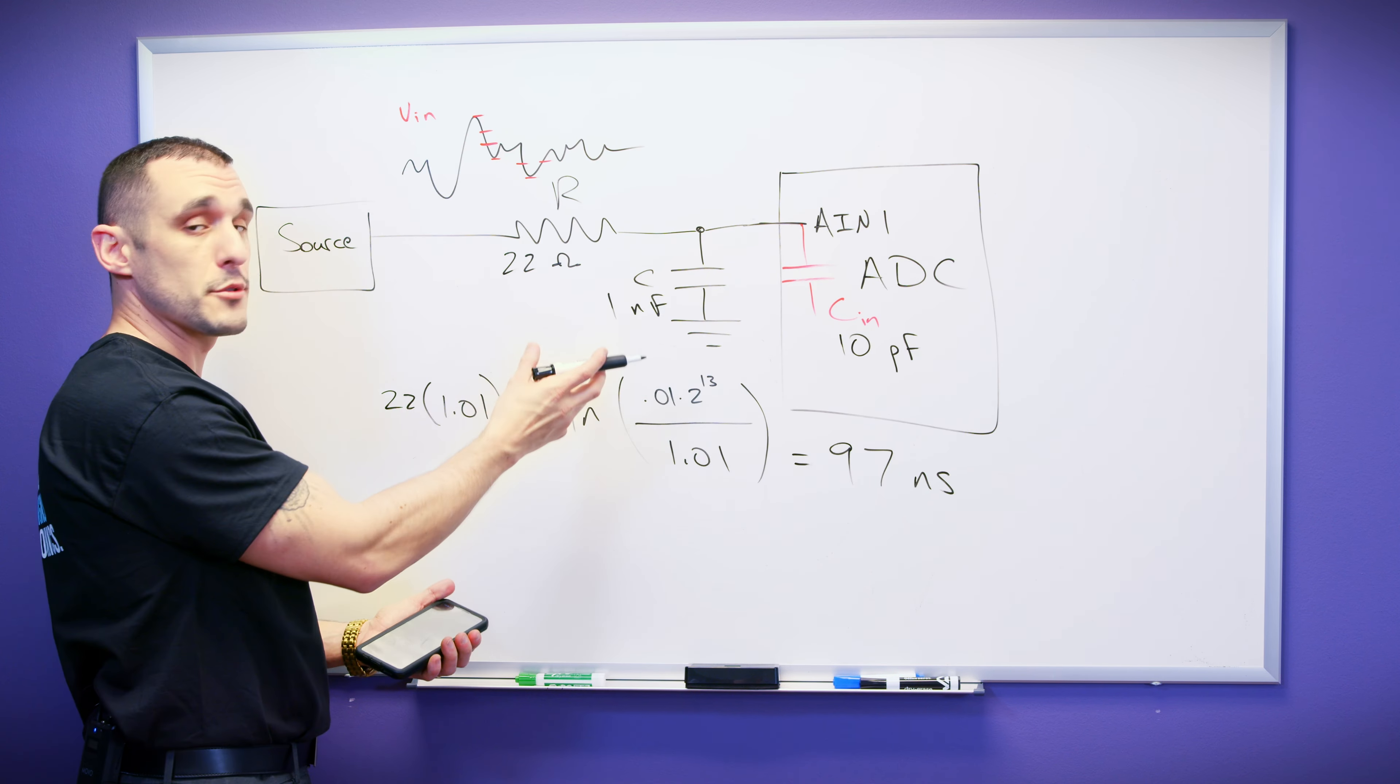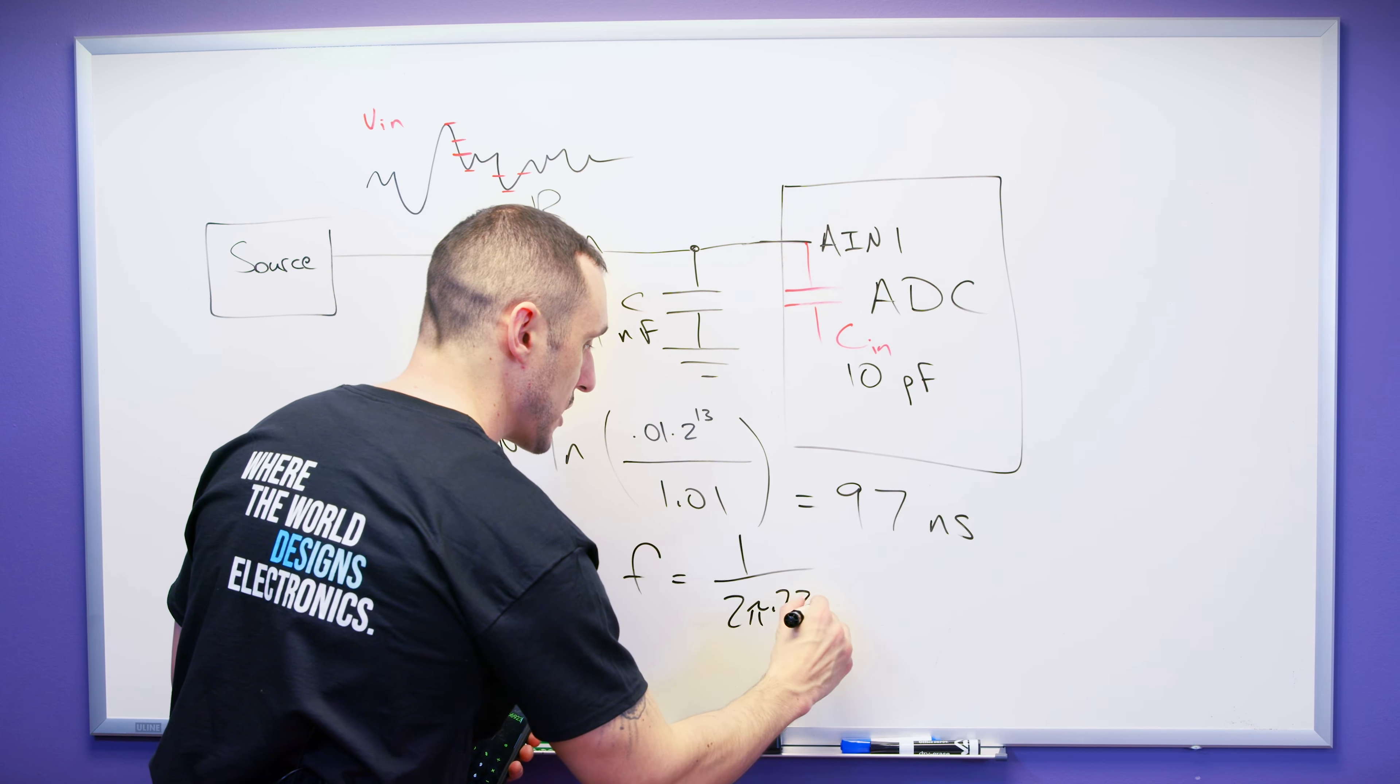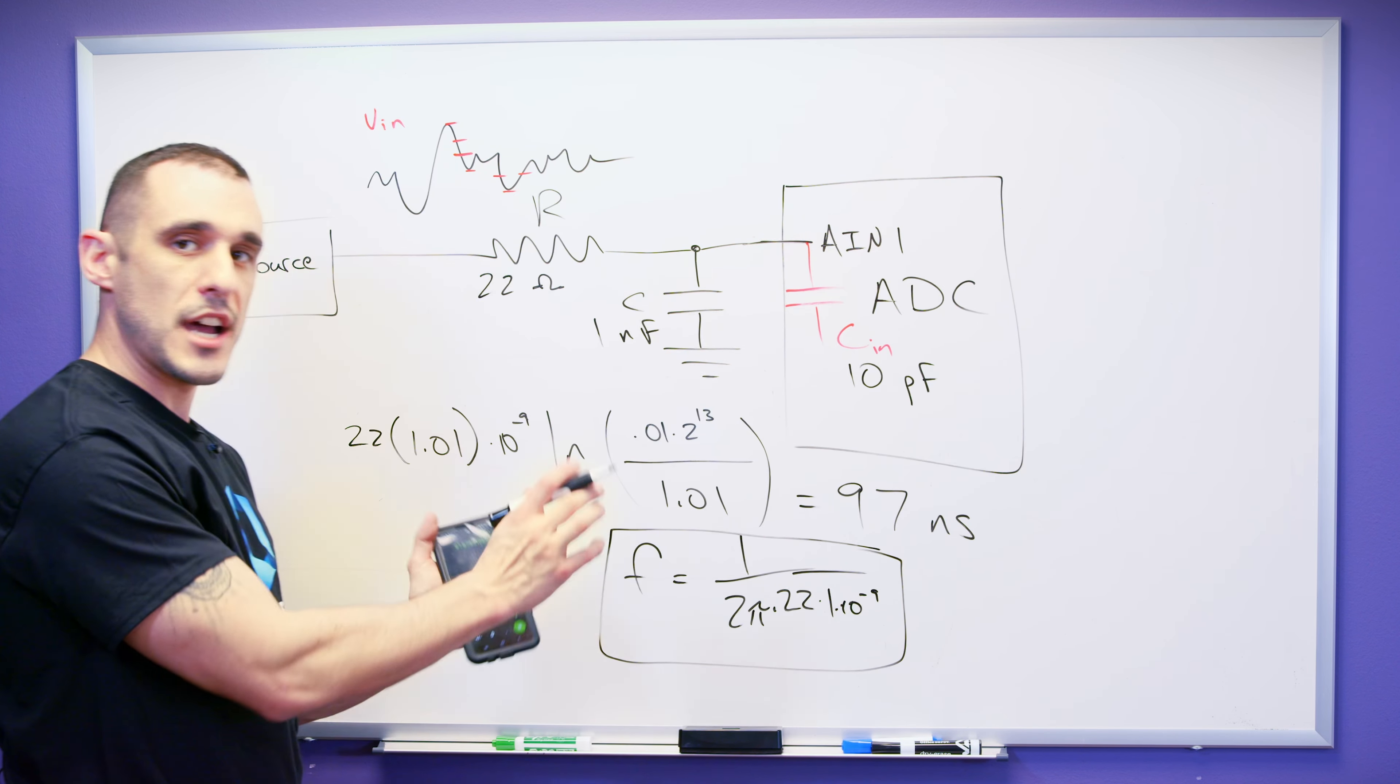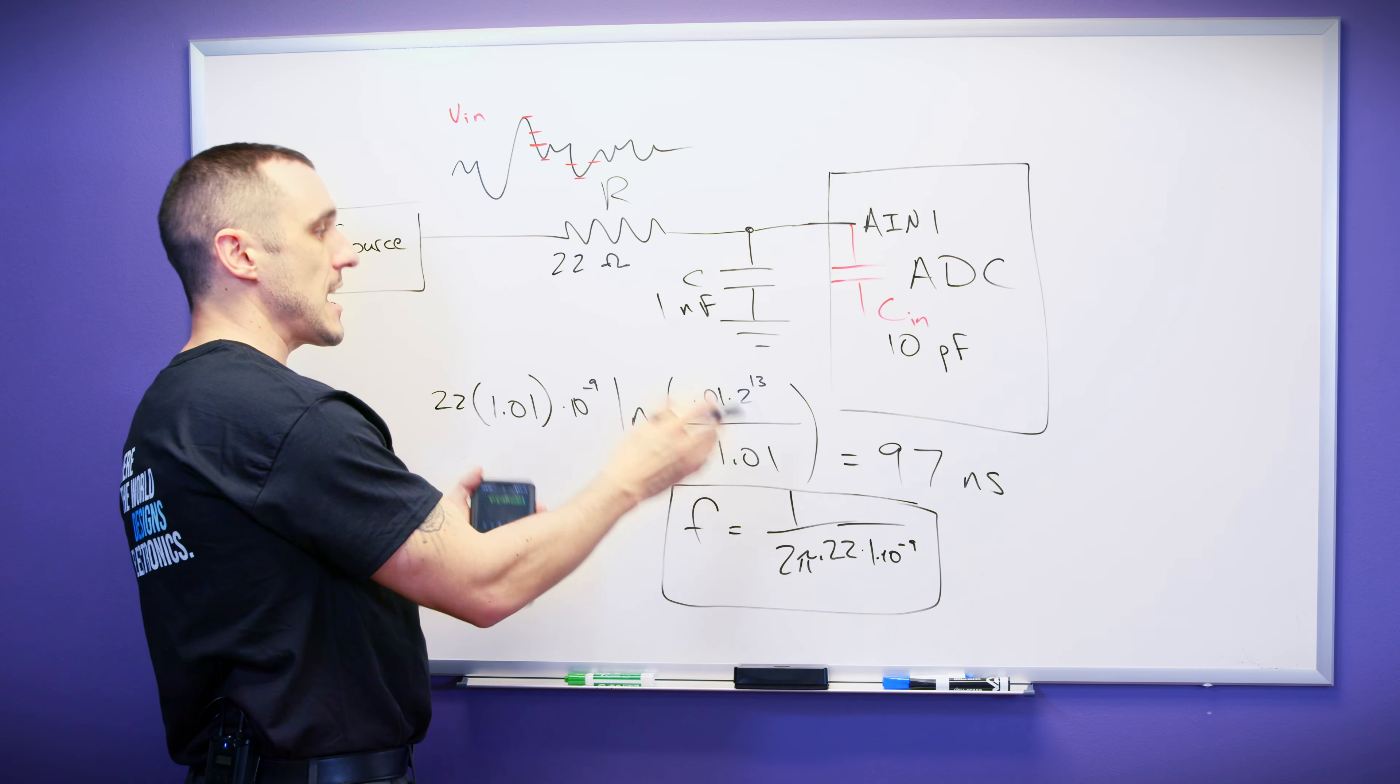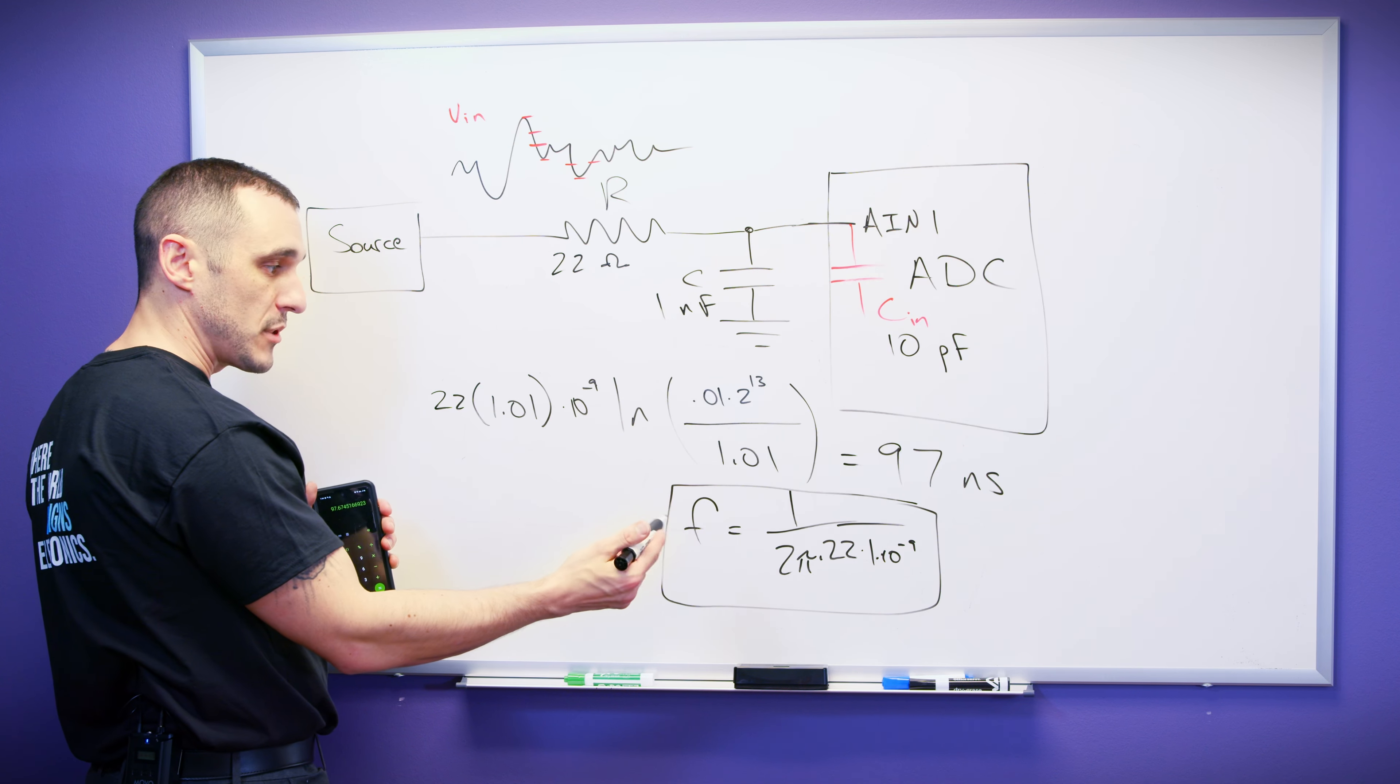So just as an example, let's say that we have a 22 ohm resistor and let's just say this is one nanofarad and we'll go with a 10 picofarad input capacitance. If we then plug in the numbers to that other formula, we'd have 22 times 1.01 times 10 to the negative ninth. And then we're going to be using a 12 bit ADC. So this will be 0.01 times 2 to the 13th power divided by 1.01. The minimum acquisition time can be found just by cranking through this and we get 97 nanoseconds. So as long as our sampling time or our acquisition time is longer than 97 nanoseconds, we can use these two values for our input.